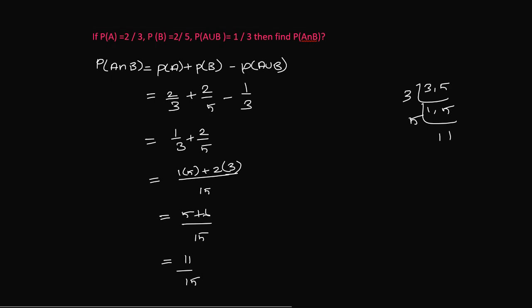So P(A) equals 2/3, P(B) equals 2/5, P(A union B) equals 1/3. Then find P(A intersection B). So the general formula...